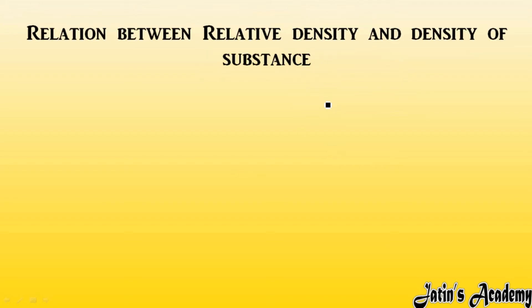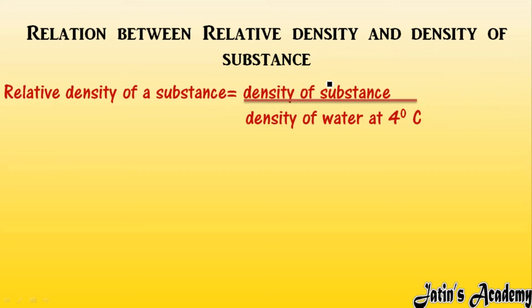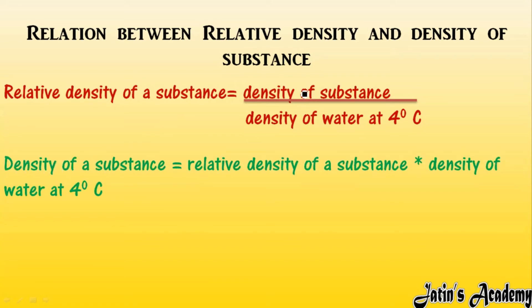Next, we look at the relation between relative density and the density of a substance. Starting from the formula — relative density equals density of substance over density of water at 4 degrees Celsius — we rearrange it. Moving density of water to the other side gives us: density of substance equals relative density of substance multiplied by density of water at 4 degrees Celsius.